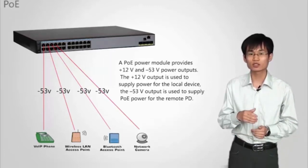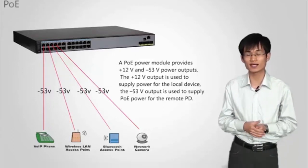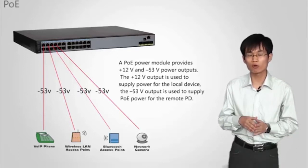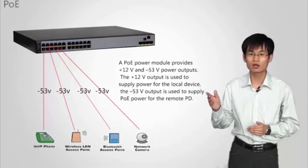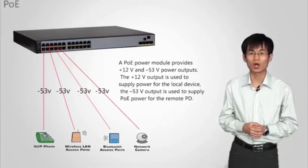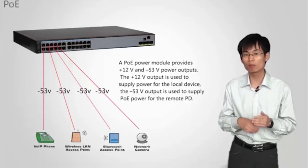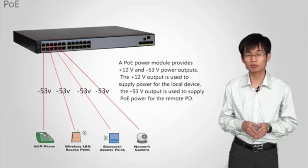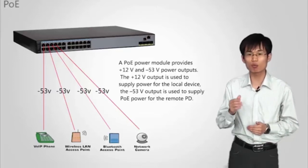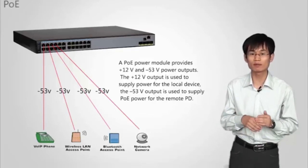A PoE power module provides +12V and -53V power output. The +12V output is used to supply power for the local device. The -53V output is used to supply PoE power for the remote PD. S5700 switches support 250W and 500W PoE power modules. The 250W PoE power modules supply 120W power for the switch and 130W power for the remote PD.